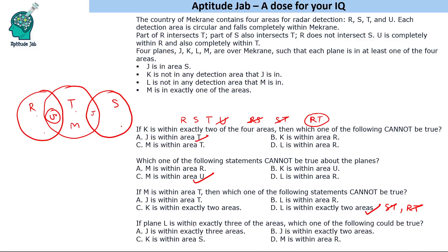Next question: if plane L is within exactly three of the areas, which of the following could be true? Three areas is only possible if L is inside U, because U lies within both R and T, giving areas R, U, and T. So L is in the U region. This means M cannot be in R, U, or T, so M must be only inside S.